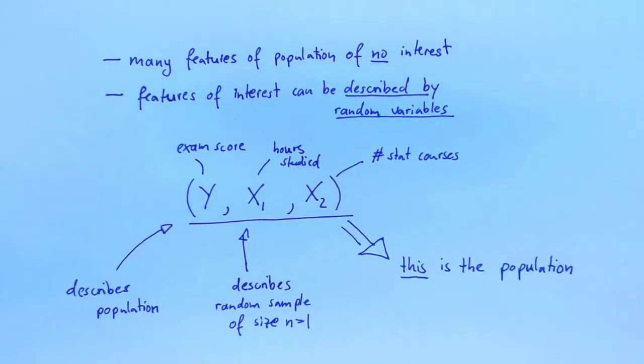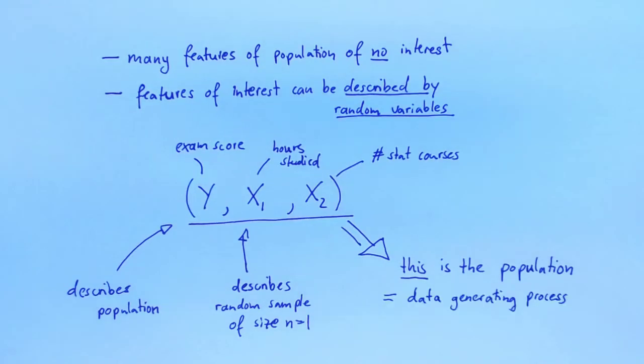In econometrics, the population is also often called the data generating process, or DGP. This emphasizes the fact that, by way of giving us samples, the population is generating the data that we are working with. This additional layer of abstraction affords us more flexibility. The DGP may model drawing from a large group, but it doesn't have to.